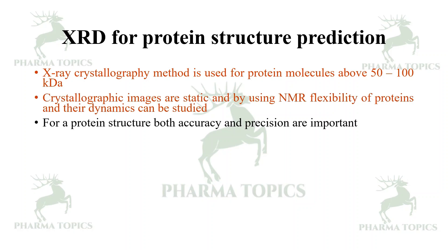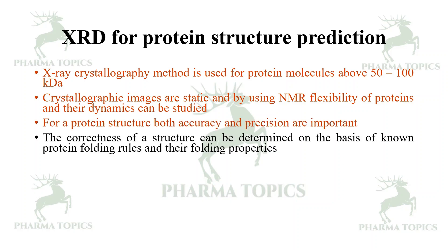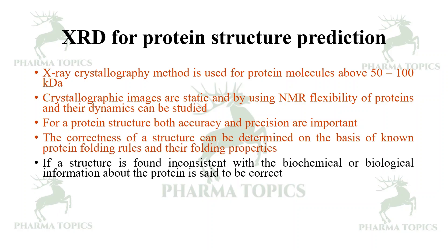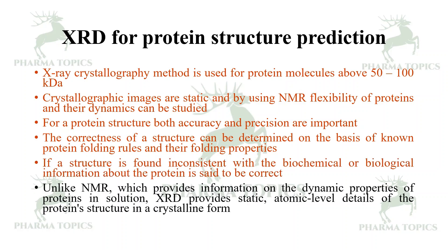For a protein structure, both accuracy and precision are important. The correctness of a structure can be determined on the basis of protein folding rules and folding properties. If a structure is found inconsistent with the biochemical or biological information about the protein, it is not said to be correct. Unlike NMR, which provides information on the dynamic properties of proteins in solution, XRD provides static atomic-level details of the protein structure in crystalline form.